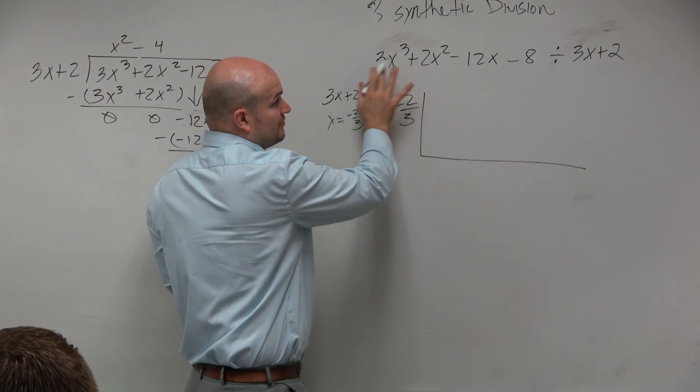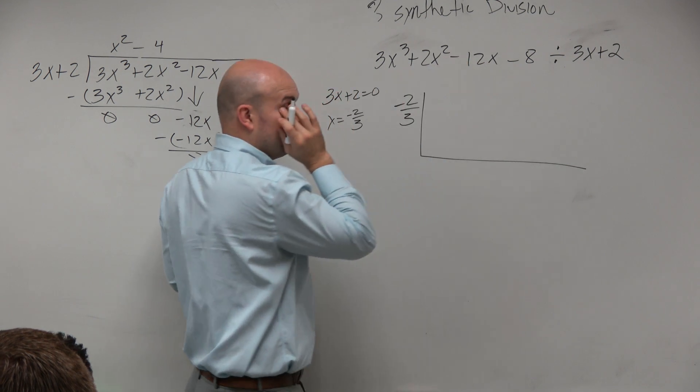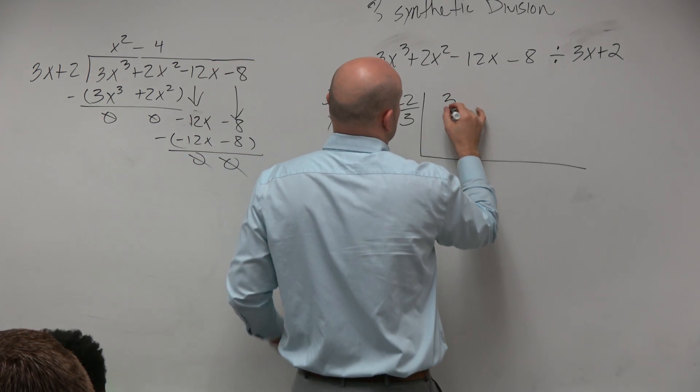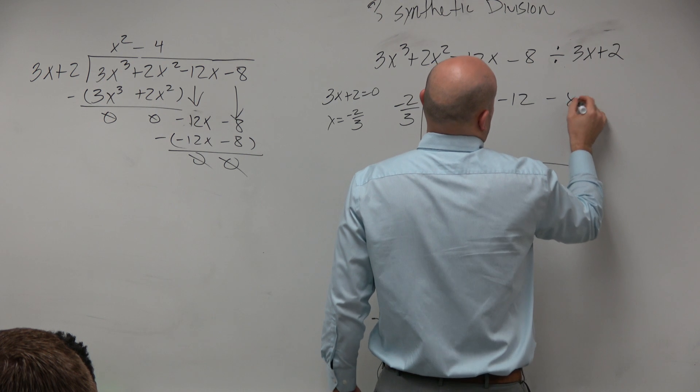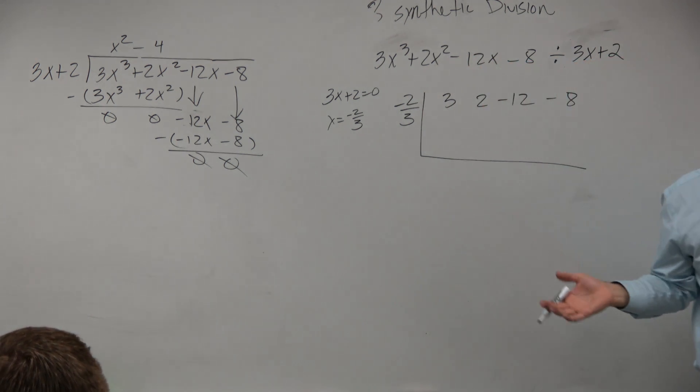Inside is going to be my coefficients. So 3, 2, 12, and negative 8. I don't have any place values. And then we just follow the algorithm.